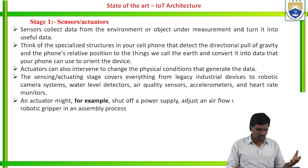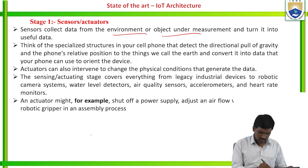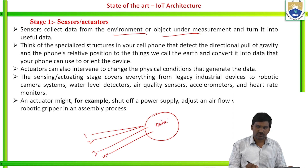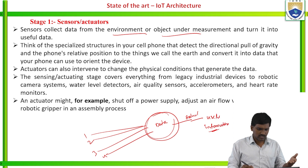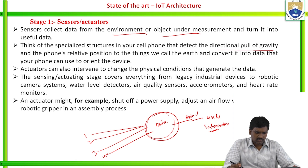Let us look at sensors and actuators one by one. Sensors gather data from the environment, measure objects, and turn raw data into useful data. From a large amount of gathered data we extract only useful information. For example, consider the specified structure in your cell phone that detects the directional field of gravity and relates the phone's position to things — converting those things into data, making your phone a user-oriented device.